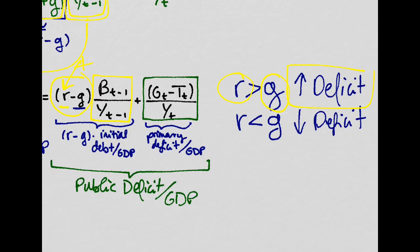On the other hand, if the interest rate we're paying for the debt is lower than the growth rate of the economy, then we will just be decreasing the public deficit over GDP ratio. So here, this comparison between the two, the interest rate we pay for the debt, and how fast our economy is growing,